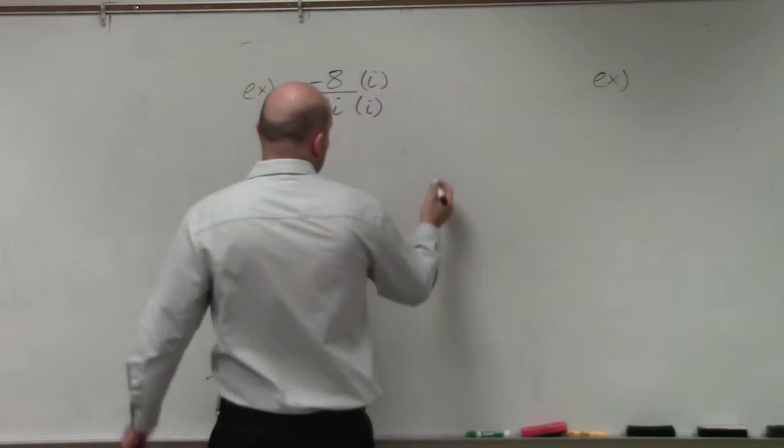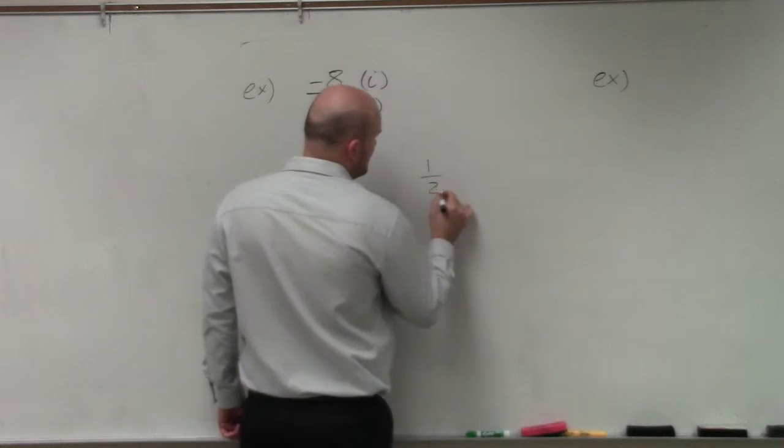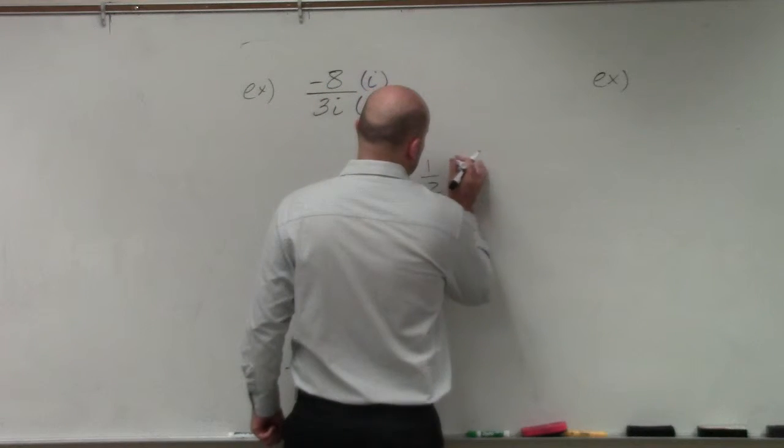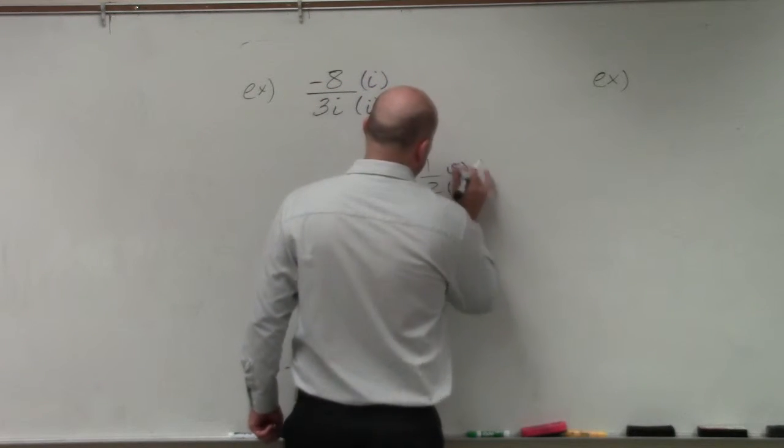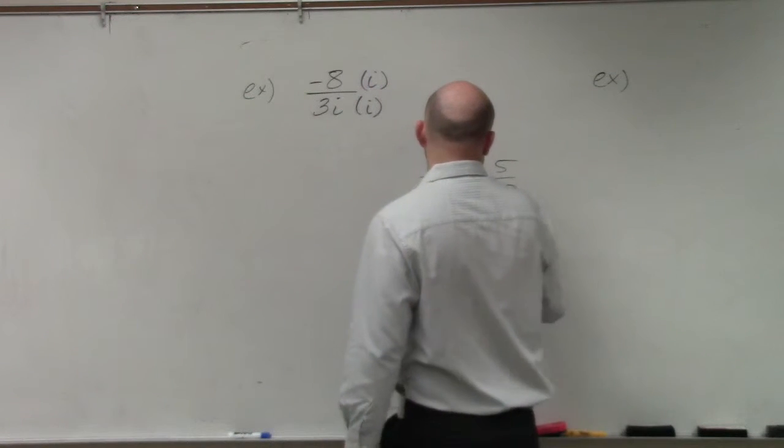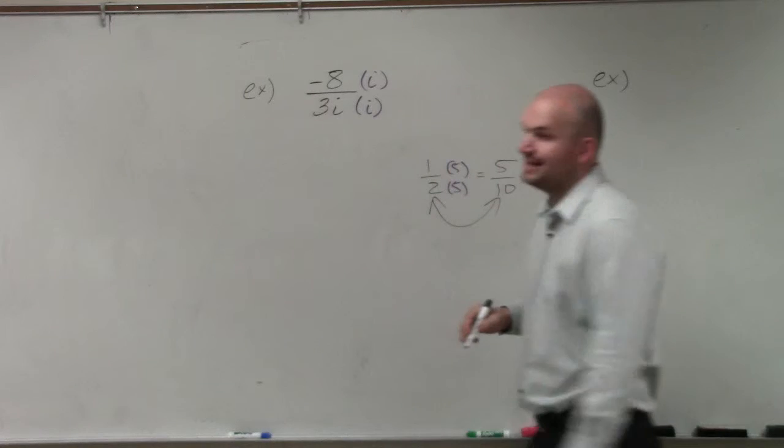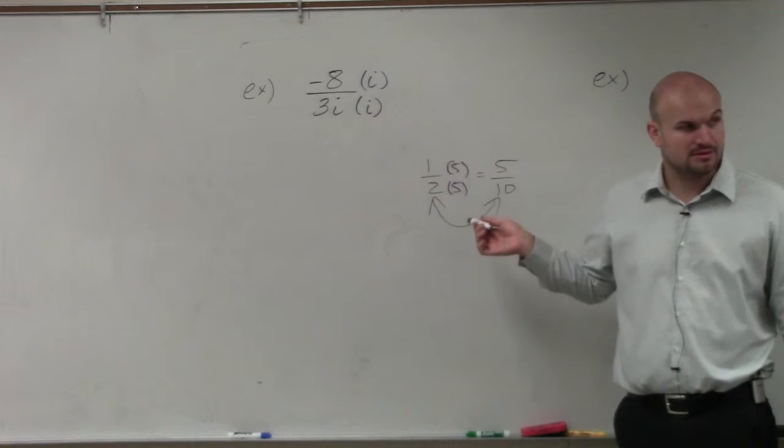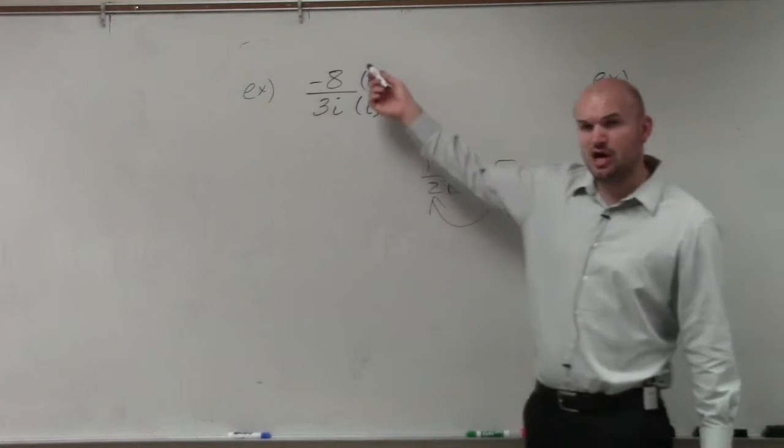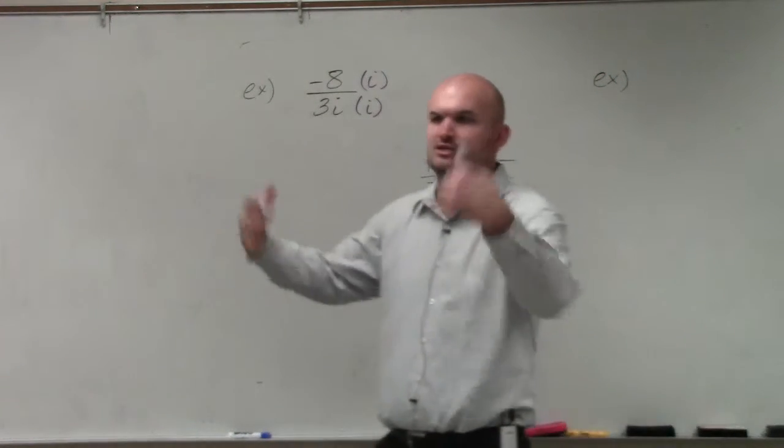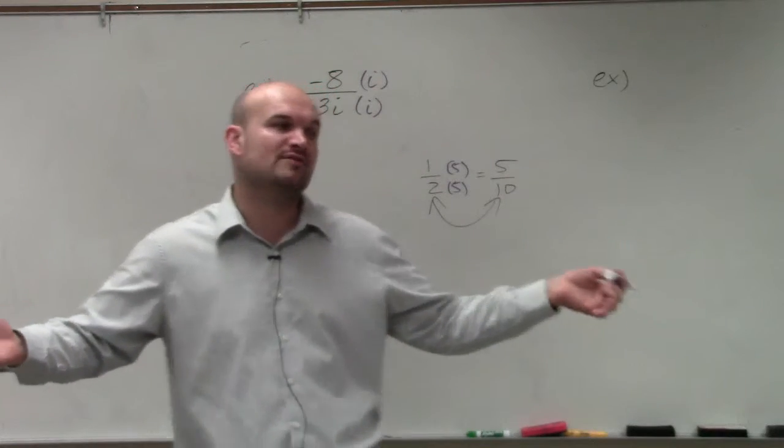To understand that, it's important to understand that if you have a fraction like 1 half and you multiply that fraction by the same number on the top and the bottom, you obtain an equivalent fraction. Do you guys agree with me that 1 half is equivalent to 5 tenths? Right, it's equivalent. So as long as you're multiplying the same number on the top and bottom, you're producing equivalent fractions. You're not changing the fraction, you're just producing an equivalent form.